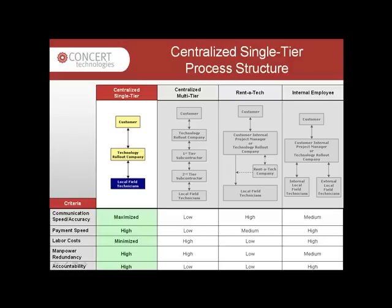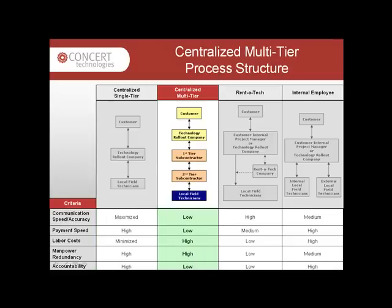In the first process structure, centralized single-tier, the customer uses a Technology Rollout Company that directly manages field technicians through a direct partnership. This allows for maximized streamlined communication flow and payment speed, due to fewer channels of communication through which to travel. Additionally, labor costs are minimized since there are the fewest number of entities to pay. Manpower redundancy and overall project accountability are high because the Technology Rollout Company provides complete management and support of the local field resources used for rollout services at each location.